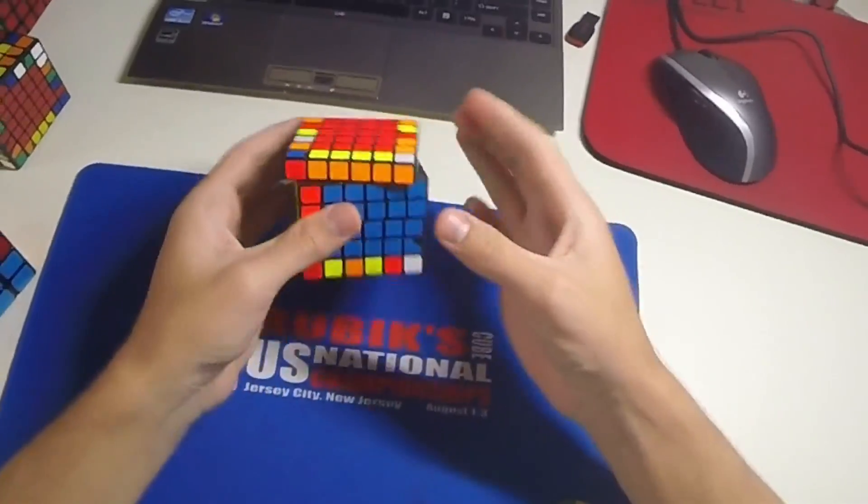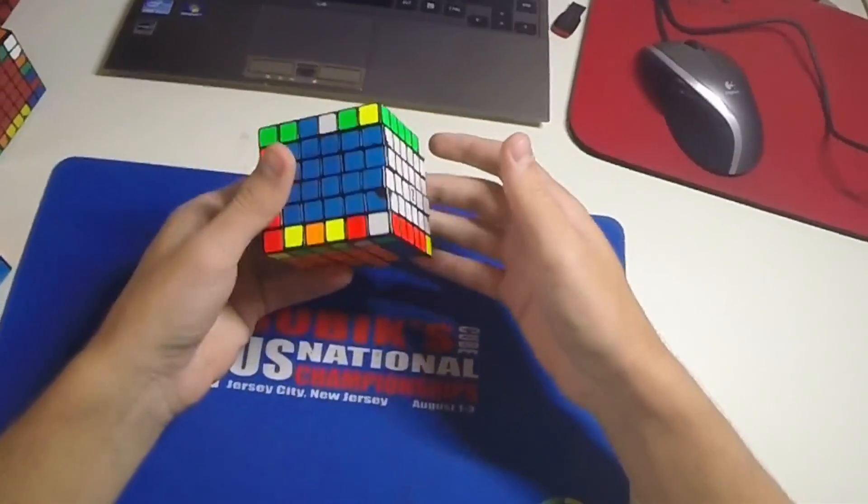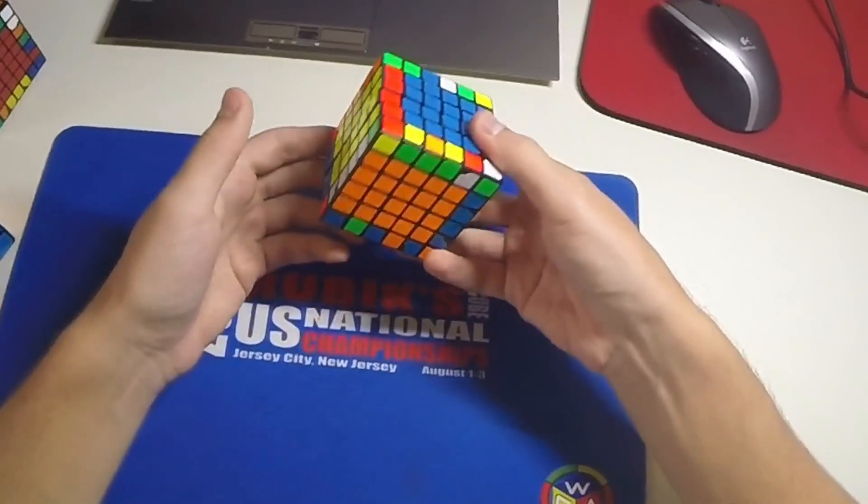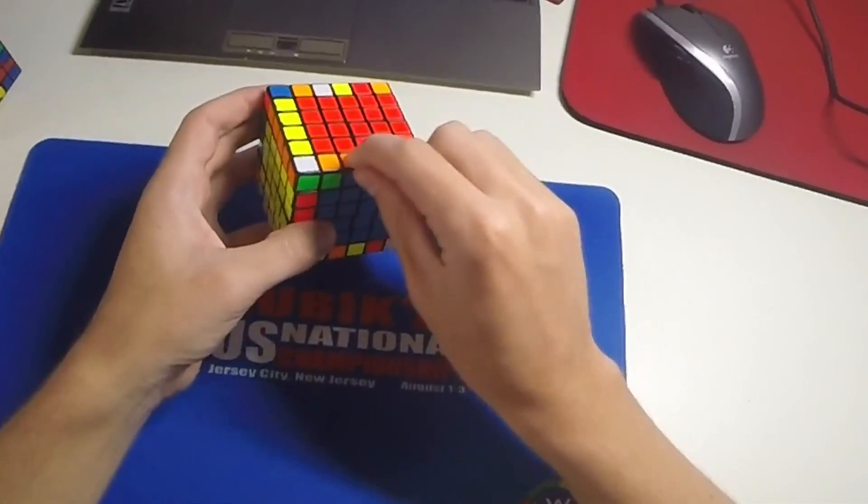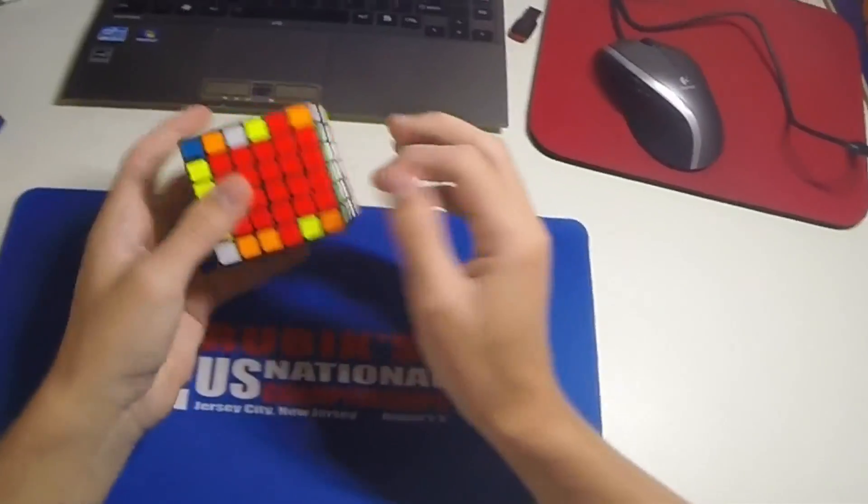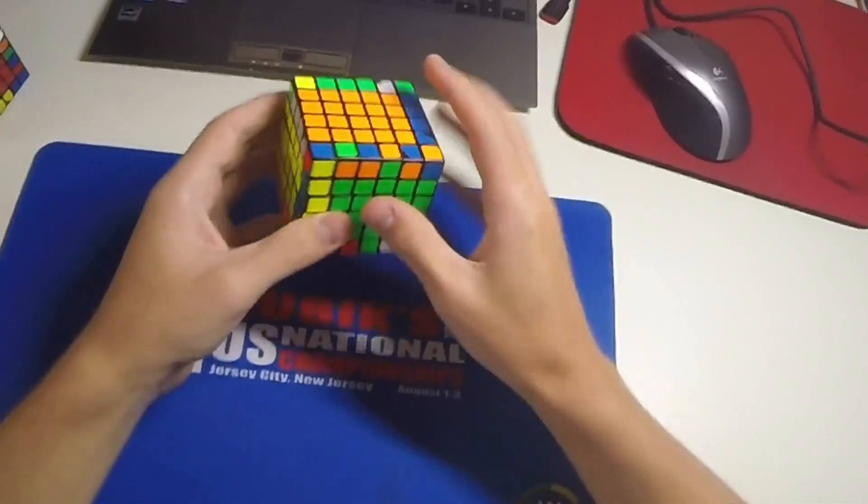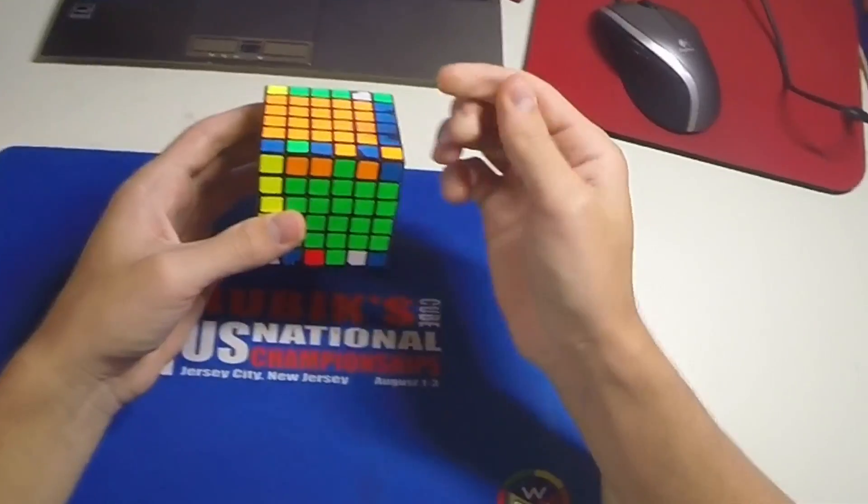Last four edges. Like with the centers, it's good to be flexible in how you do your last four edges. Some people prefer to do it solving the inner two and then the outer ones, or some people just like to freestyle—if they see something good, they solve it.